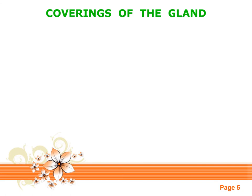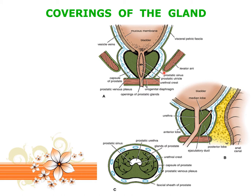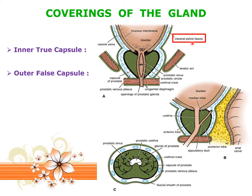The prostate gland is covered by two capsules: an inner true capsule and an outer false capsule. The true capsule is a condensation of parenchyma. The false capsule is formed by the visceral layer of pelvic fascia, which also covers the urinary bladder in a single compartment. Notably, pelvic fascia is not derived from peritoneum, as the pelvic viscera are non-peritoneal structures. The pelvic fascia forming the false capsule is also known as the prostatic sheath. Anteriorly, the prostatic sheath is related to the puboprostatic ligaments.